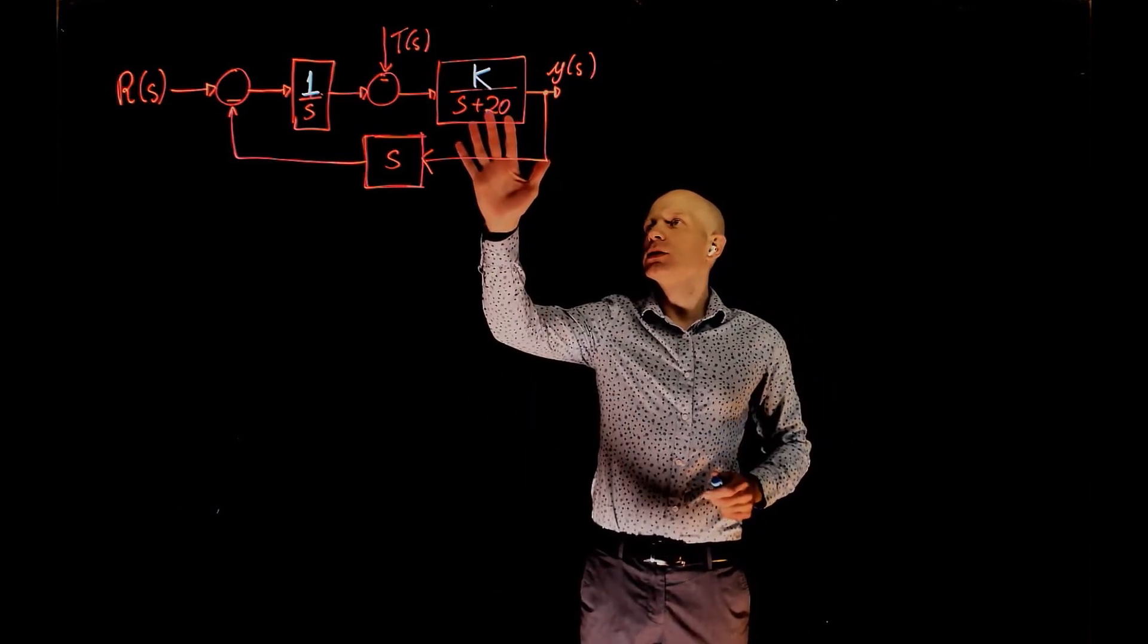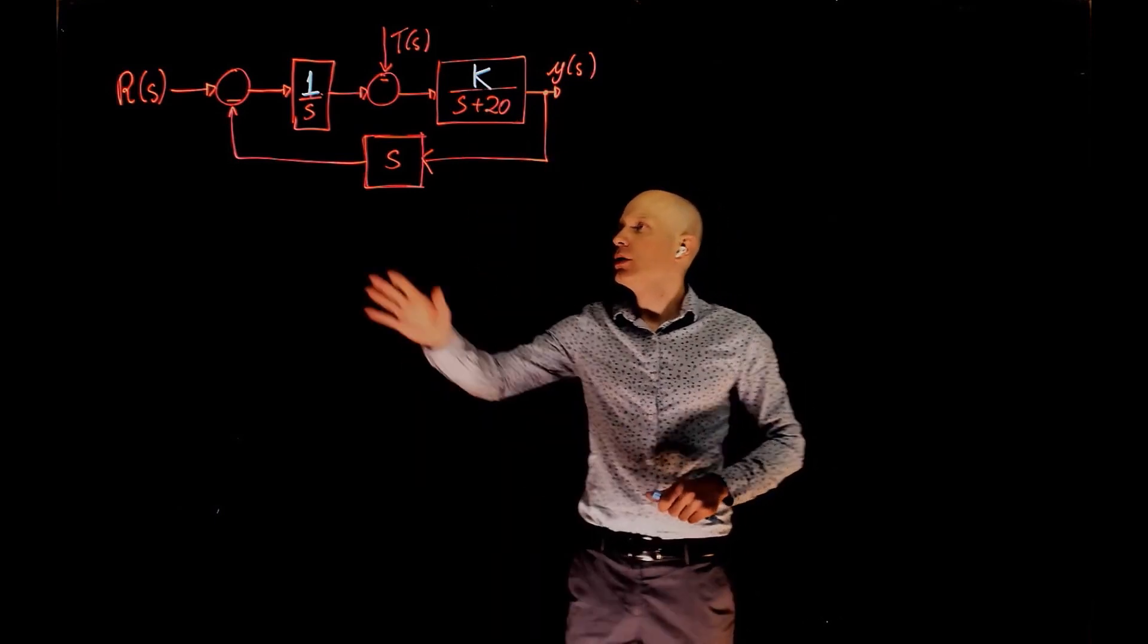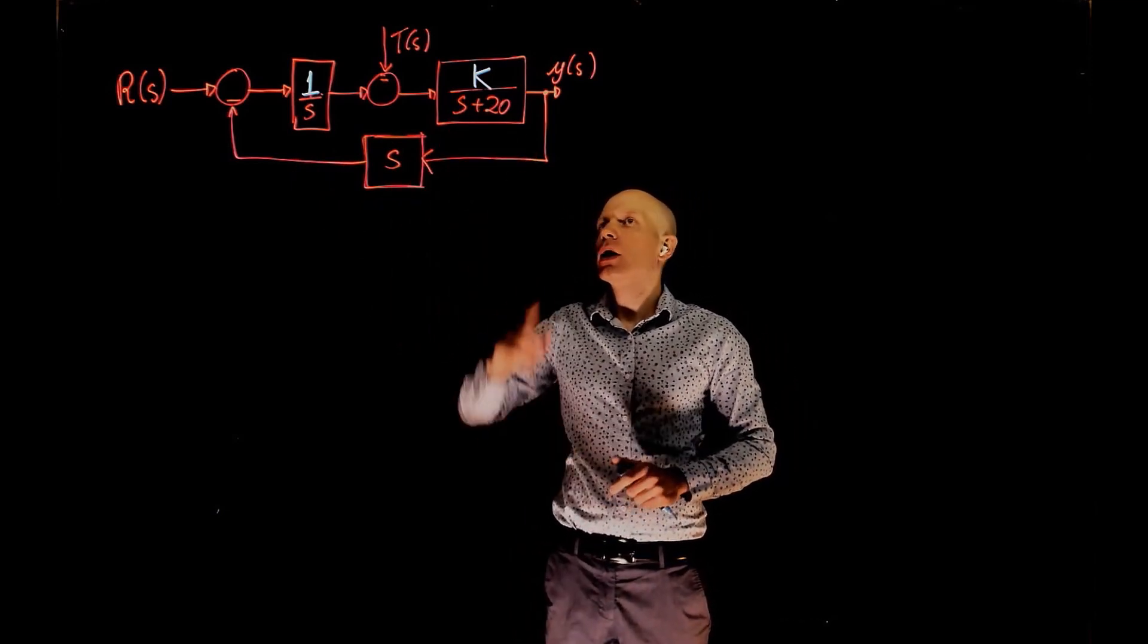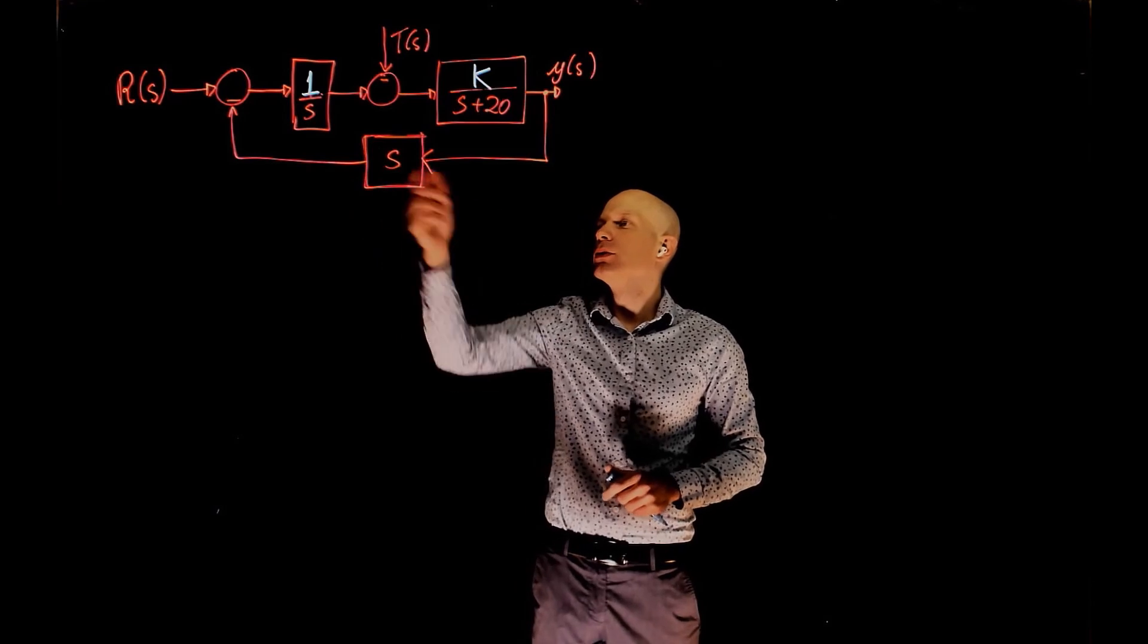In this example we have a plant represented by this transfer function. Here is our controller. There is a parameter in the plant called k, and we have this feedback loop with a derivative gain.